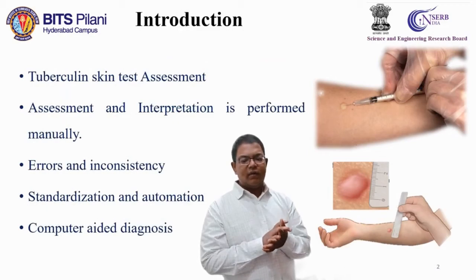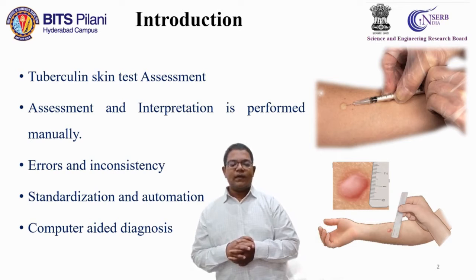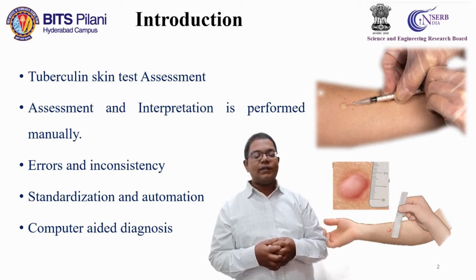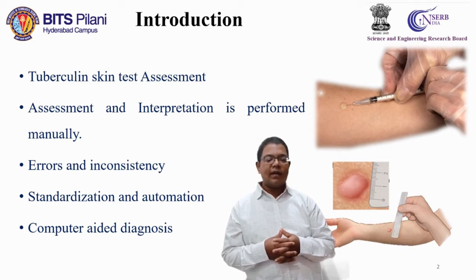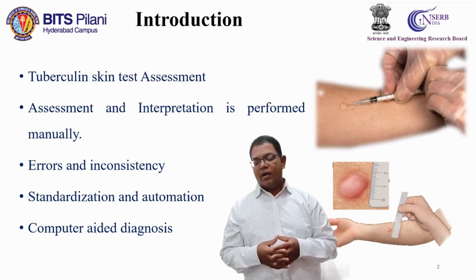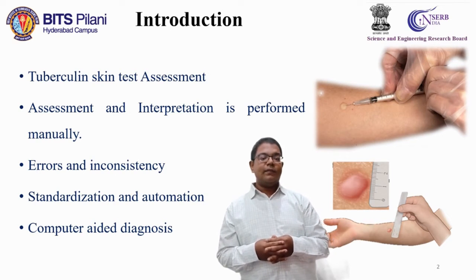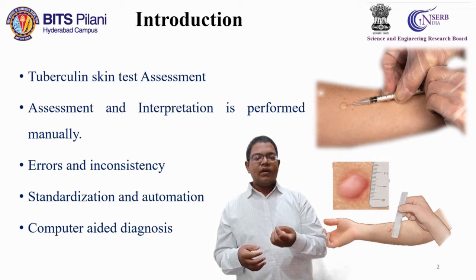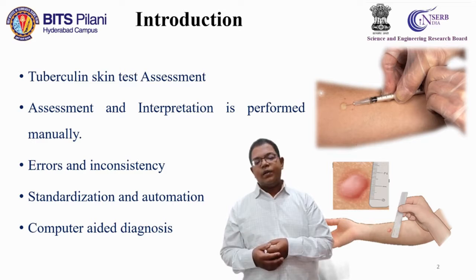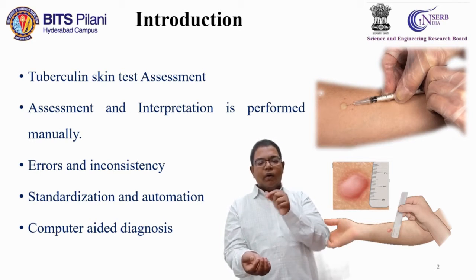The Tuberculin Skin Test, also known as TST or the Mantoux test, is a test used to detect the level of latent tuberculin infection in children and adults. An individual suffering from TB is generally sensitive to the tuberculin injection. The individual is administered 1 to 2 ml of tuberculin into the forearm, which causes a small induration or boil-like growth.